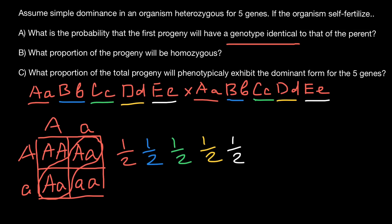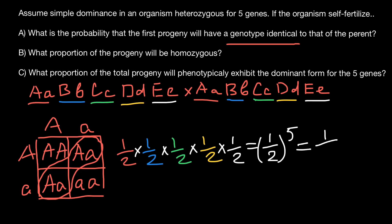So now, in order to find the probability that all these events for each gene would happen, we just have to multiply all these independent probabilities. So one half multiplied by one half, by one half, by one half, by one half is equal to one half to the power of five. One half times one half is one quarter; times one half is one eighth; times one half is one sixteenth; and times one half is one out of thirty-two.